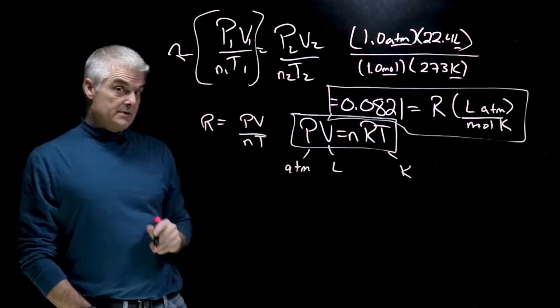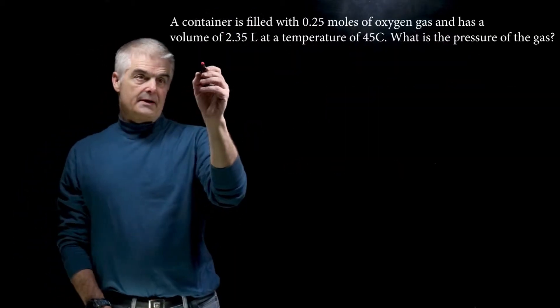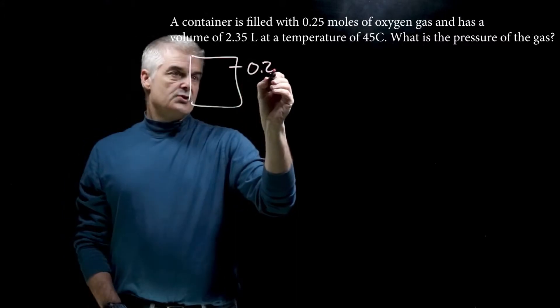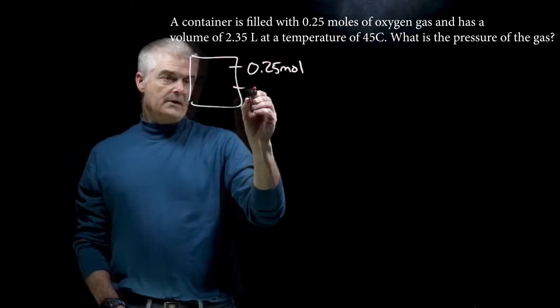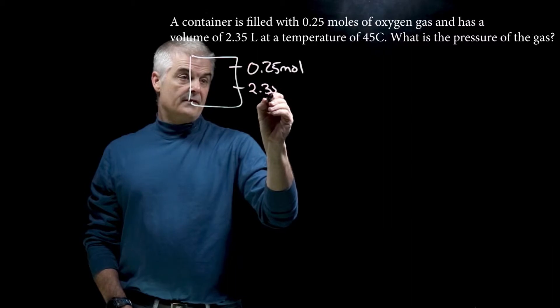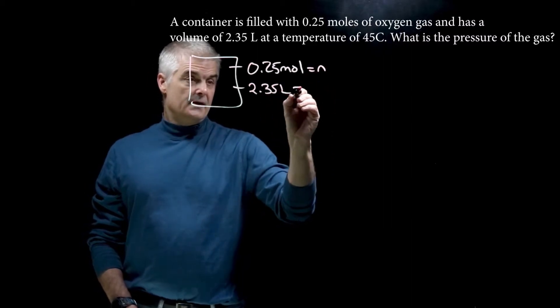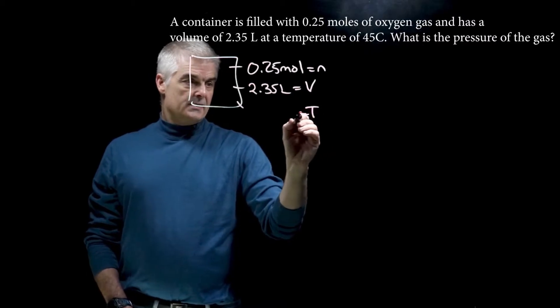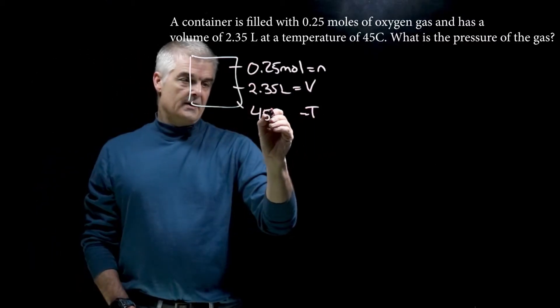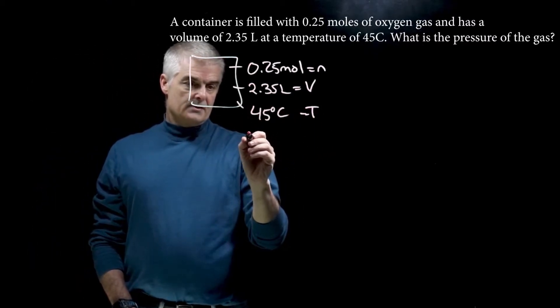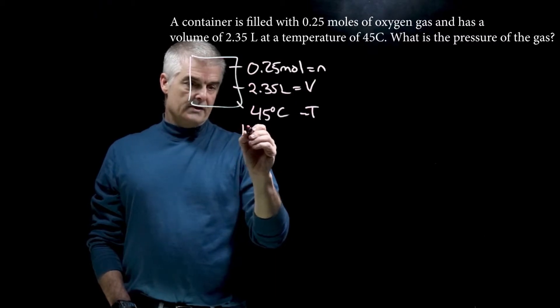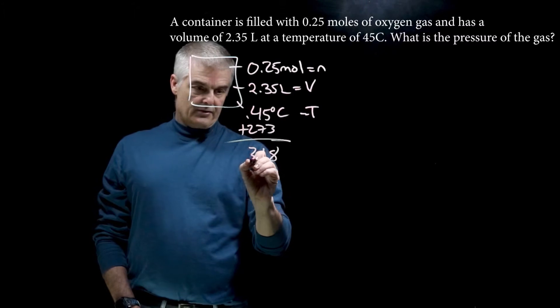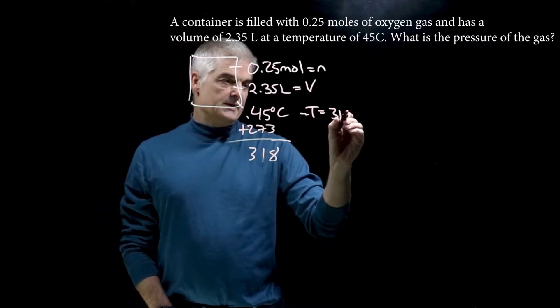Now let's do a couple of examples. So as you can see, we've got a container. I'll just make it a box. And it contains 0.25 moles of a gas. The volume is 2.35 liters. So this is equal to N. This is equal to V. And its temperature is equal to 45 degrees Celsius. So I want to add 273 to that. That's 318. So this is 318 Kelvin.